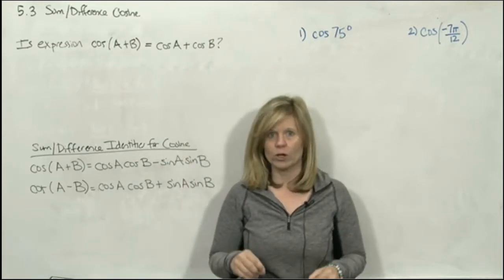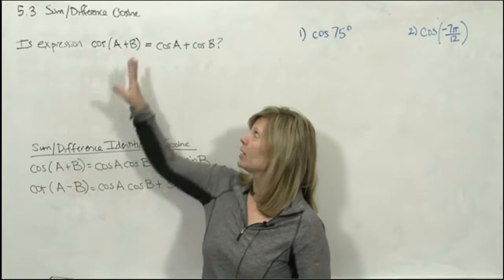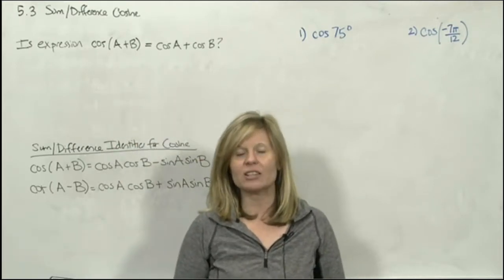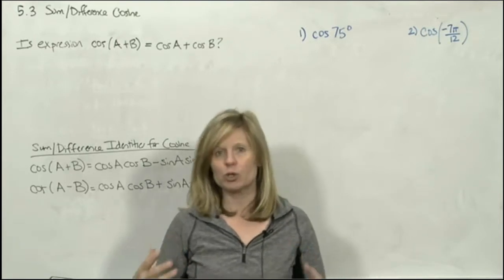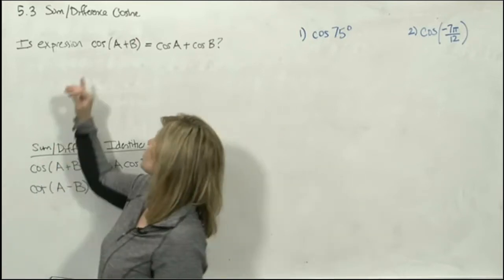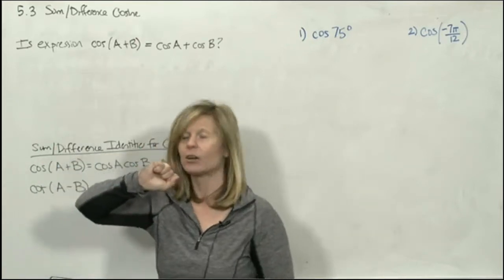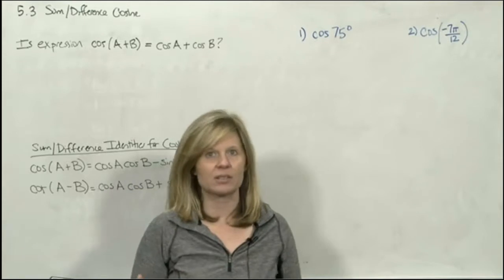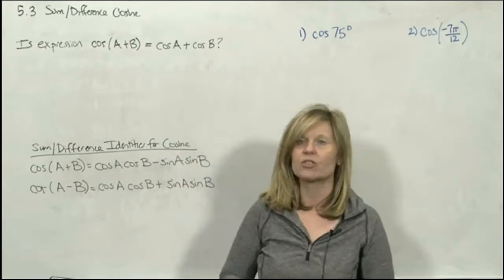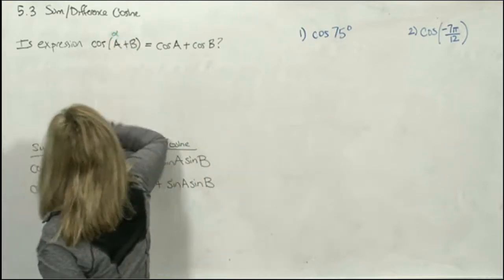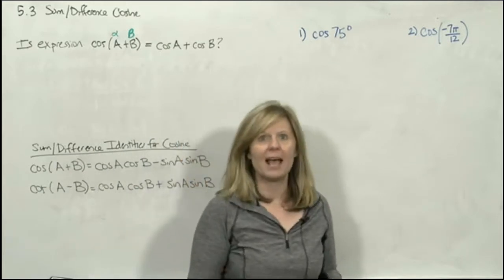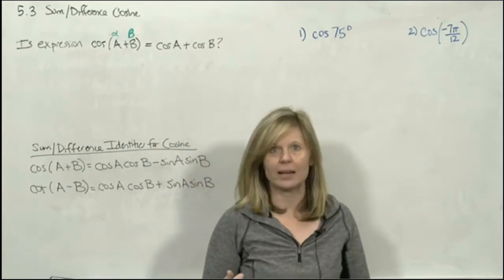Today we're going to focus on one trig function only. In 5.3, we talk about cosine. We're going to talk about an identity that doesn't deal with just one angle theta — it deals with two angles. In your textbook, the author uses capital A for the first angle and capital B for the second angle. Back in my day, we always used Greek letters, so A really represents alpha and B represents beta.